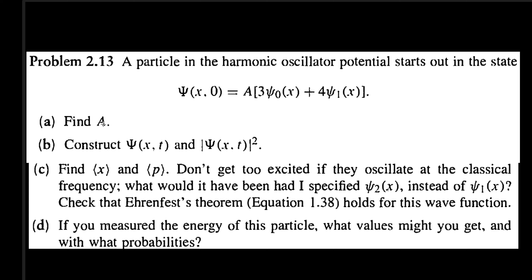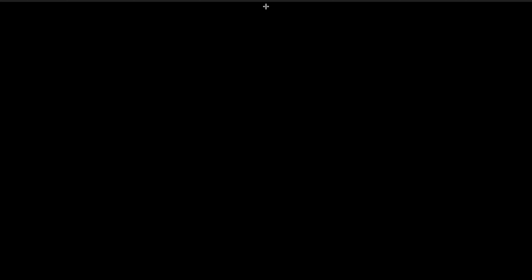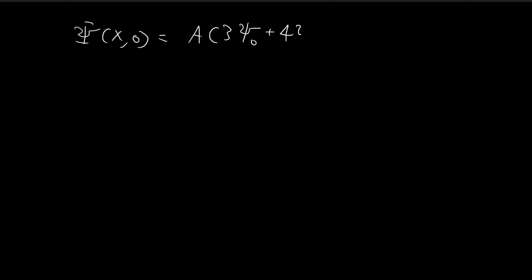In part A of this problem, we need to find the constant A. We're given that the initial wave function, evaluated at time equal to 0, is equal to this expression over here. The one thing we do know is that this initial wave function has to be normalized.